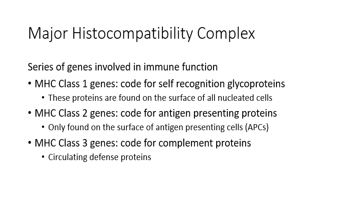MHC class 1 proteins are glycoproteins found on the surface of all nucleated cells in your body — essentially all cells that have nuclei. These are unique to you; everyone has a unique set of MHC class 1 genes that code for a unique ID card on the surface of all your nucleated cells. When immune cells encounter your own body cells, they see the MHC class 1 that matches you and recognize it as a self cell, and don't destroy it.